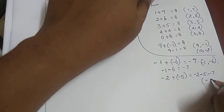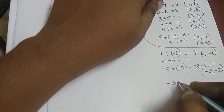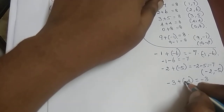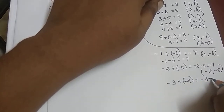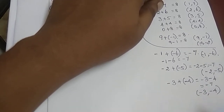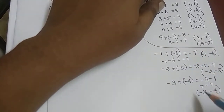Second pair is minus 2, minus 5. Then third: minus 3 plus minus 4 equals minus 7. So minus 3, minus 4. The reverses are: minus 4, minus 3 and minus 5, minus 2 and minus 6, minus 1. These are all negative integer pairs.